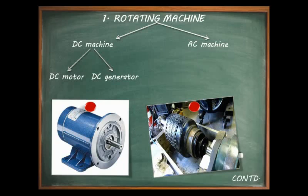A generator is usually kept in a suitable position, handled by technical persons, so mechanical protection for coils and armature can be reduced to a minimum, which also facilitates cooling, inspection, and repair. On the other hand, motors work in conditions of dampness, dirt, inflammable gases, chemical fumes, and liability to mechanical damage, so protection must be adequate. That is why the frames of DC motors are made flame-proof, semi-enclosed, or fully enclosed.